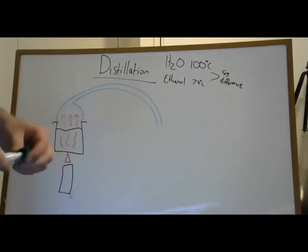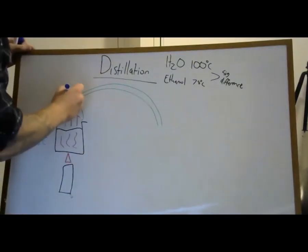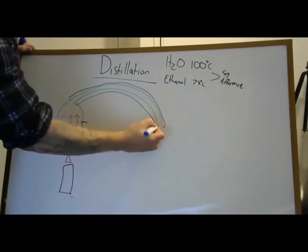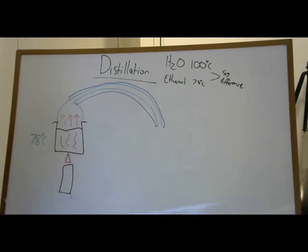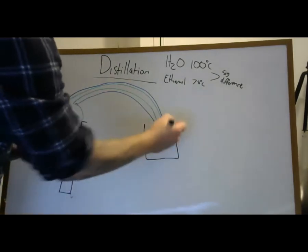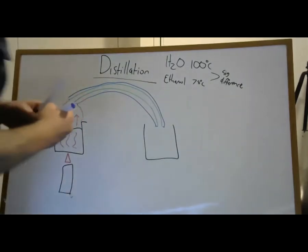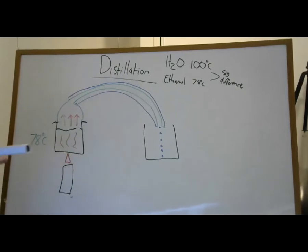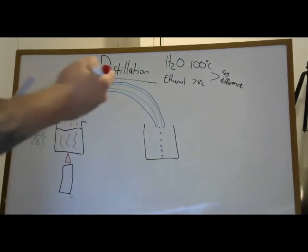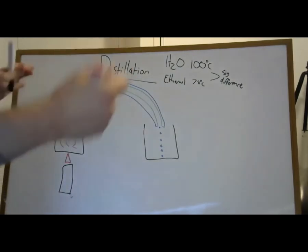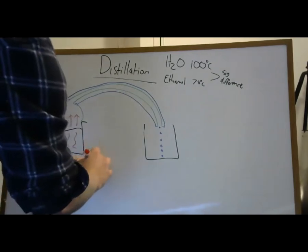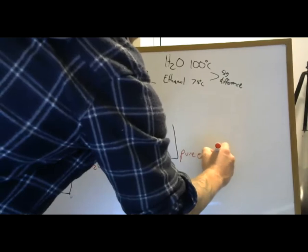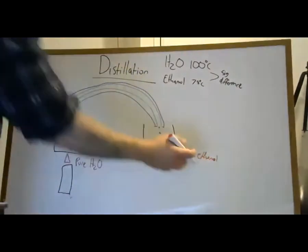On the outside of the condenser pipe, we have cold water being pumped in around the pipe. The vapor travels through and condenses. On the other side we end up — assuming it's just alcohol and water, though wine obviously has other components — with pure ethanol on one side and pure water on the other side. Well, we'll never have truly pure ethanol, but that's a discussion for another time.